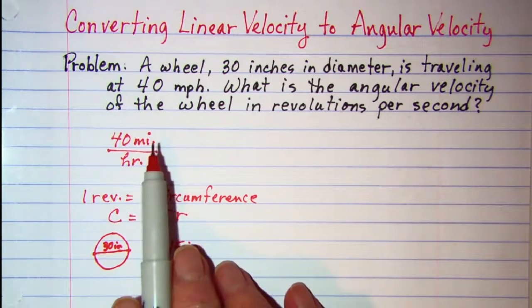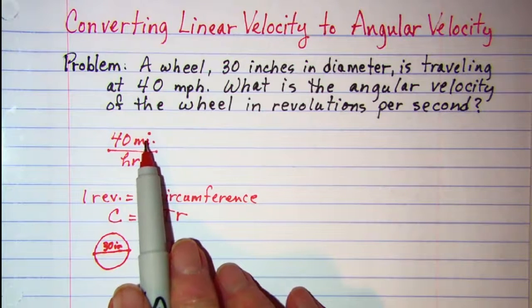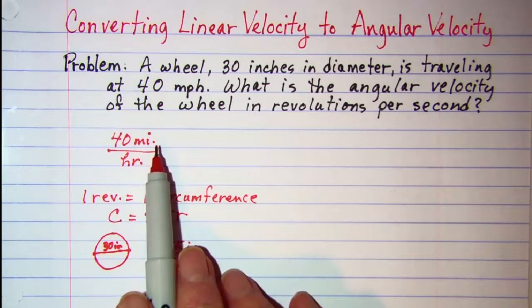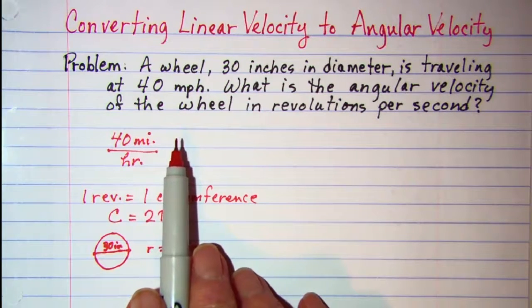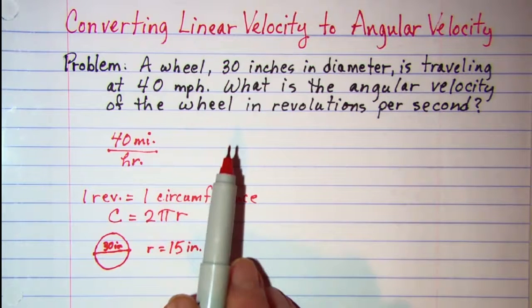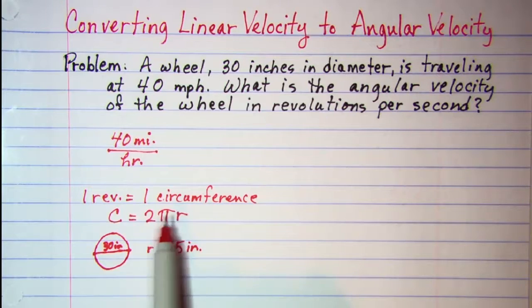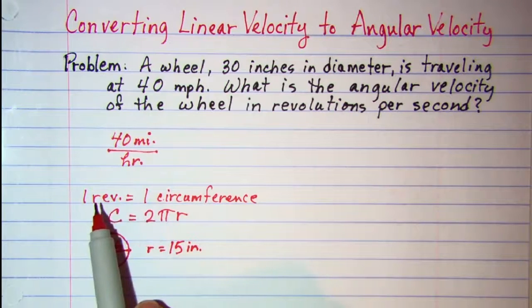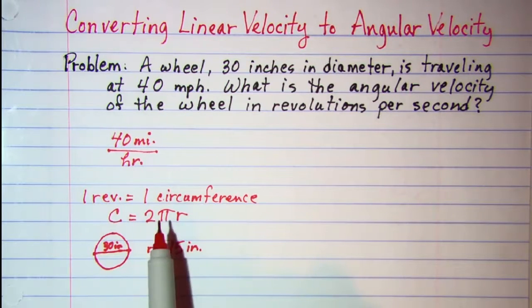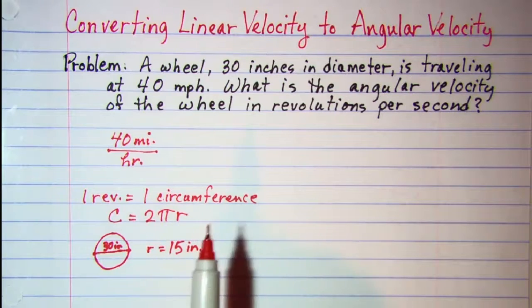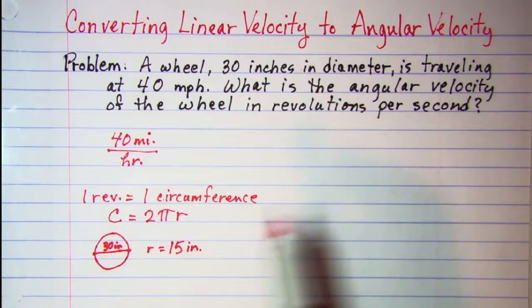So we need to go from miles to feet, and then from feet to inches, and then from inches using our circumference to revolutions unit multiplier. So that's our plan of attack.